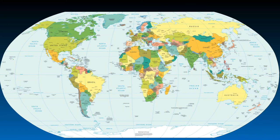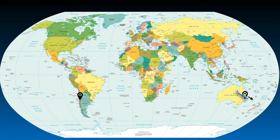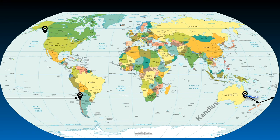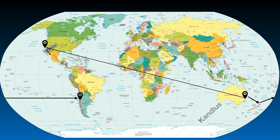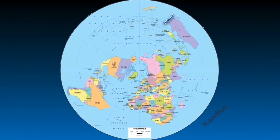Flat Earth believers are also suspicious of airlines. For example, if the Earth is a sphere, the only logical way to fly from Sydney to Chile is a straight line over the Pacific, staying in the southern hemisphere along the way. Refueling can be done in New Zealand if needed. In fact, flights from Sydney to Chile go to the northern hemisphere, stopping at Los Angeles International Airport and departing again. This path is not logical at all in the spherical Earth model, but it seems quite logical in the flat Earth model.